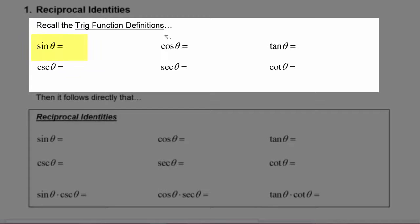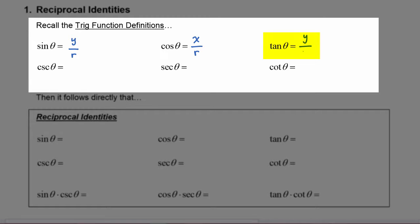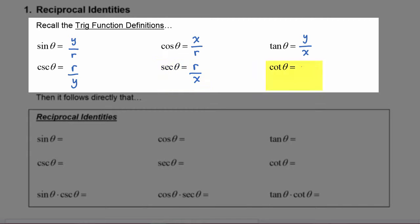We know that sine of theta is y over r, and cosine of theta is x over r, and tangent of theta is y over x. We know that cosecant of theta is r over y, secant of theta is r over x, and cotangent of theta is x over y.